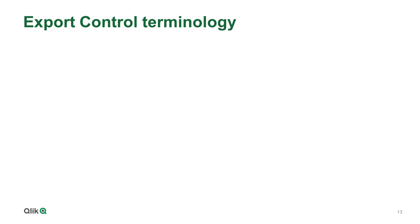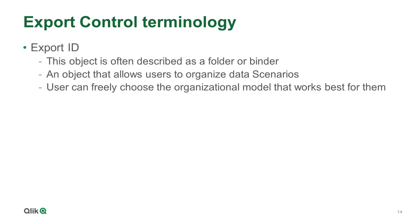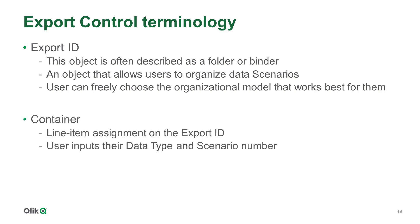Before sharing how-to content, there are two terms that warrant some attention: Export ID and Container. An Export ID can be thought of as a folder or binder — basically an object that allows users to organize their data scenarios. There is no right or wrong way to manage Export IDs, and it's up to the user to choose the model that works best for them. A Container is a line item on the Export ID; this is where the user inputs their data type and scenario number.